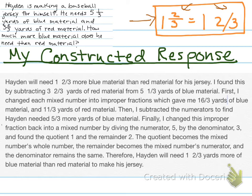Hayden will need 1 and ⅔ more blue material than red material for his jersey. I found this by subtracting 3 and ⅔ yards of red material from 5 and ⅓ yards of blue material. First, I changed each mixed number into improper fractions, which gave me 16/3 yards of blue material and 11/3 yards of red material.